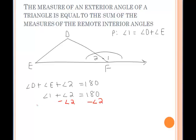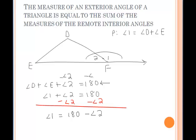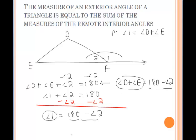Let's subtract angle 2 from both sides of the equation. So we know that angle 1 is equal to 180 minus angle 2. Going back to our first equation and subtracting angle 2 from both sides, we know that angle D plus angle E must equal 180 degrees minus angle 2. If we notice, angle 1 and angle D plus angle E are equal to the same thing — they're both equal to 180 minus angle 2.